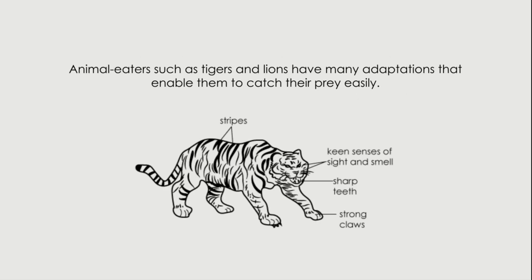Animal eaters such as tigers and lions have many adaptations that enable them to catch prey easily. With their stripes, they camouflage amongst plants. They have keen senses of sight and smell to spot their prey and plan their attack. They have sharp teeth to tear into the meat of their prey, and strong claws to attack and capture the prey.